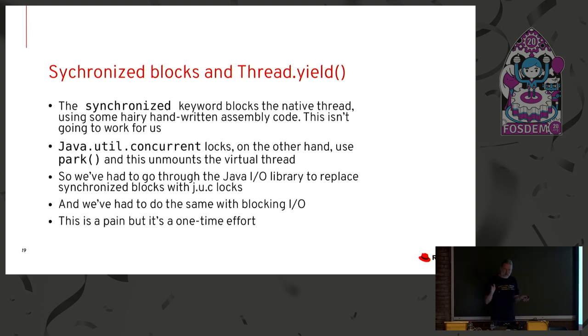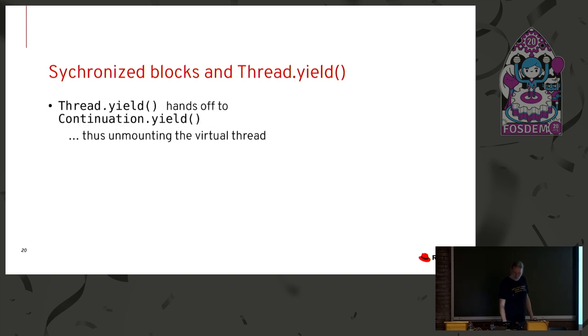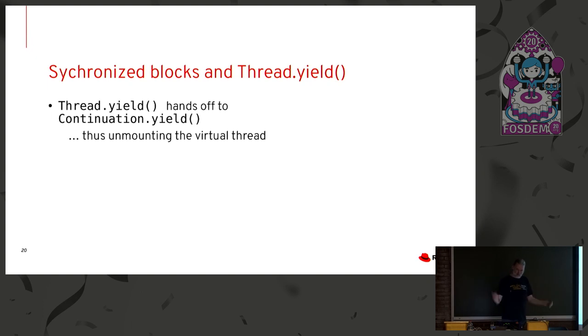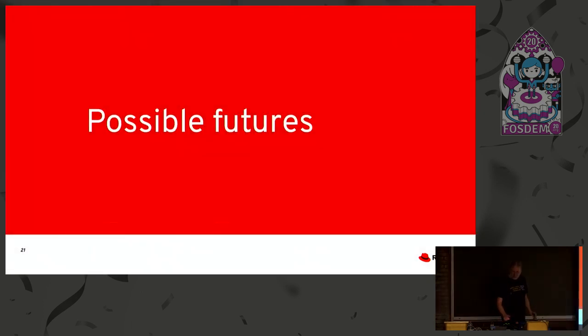So we've had to go through the Java IO library replacing these synchronized blocks — it only has to be done once. And Thread.yield() hands off to continuation yield, unmounting the virtual thread.